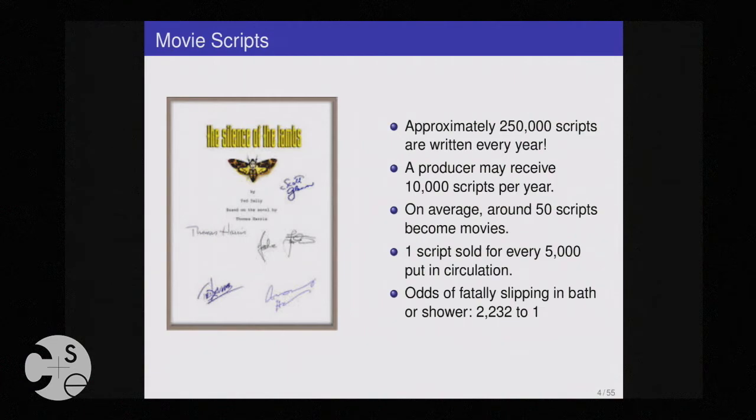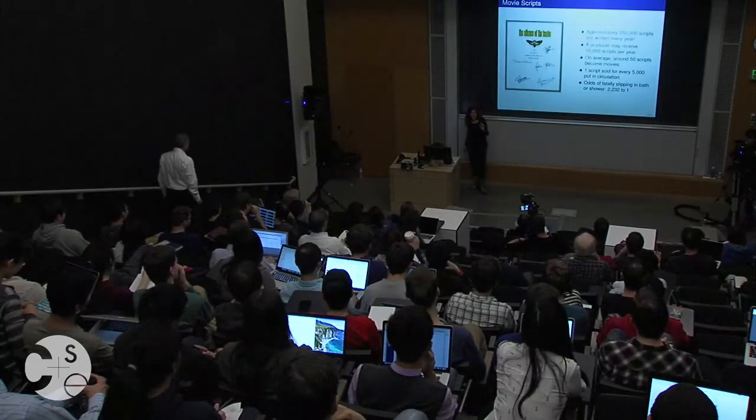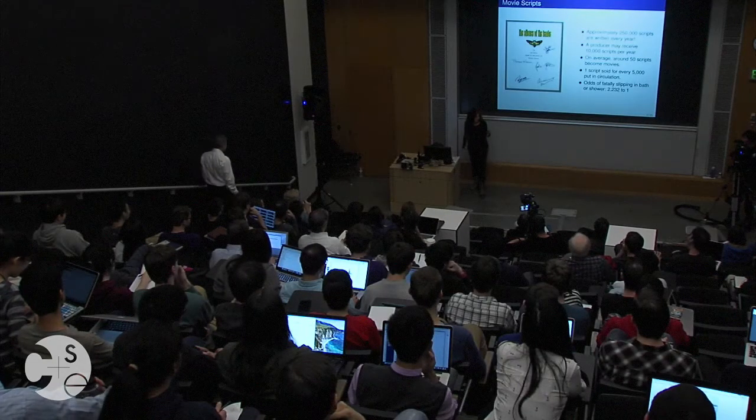Throughout the talk, I will be using The Silence of the Lambs as our test case. A logline is something that sells the movie. For The Silence of the Lambs: 'To enter the mind of a killer, she must challenge the mind of a madman.' And the synopsis: in this chilling film based on the novel by Thomas Harris, a serial killer is terrorizing the Midwest. The FBI sends agent Clarice Starling to interview a prisoner who is a psychiatrist, Hannibal Lecter, who agrees to give insight into the mind of the on-the-loose criminal.